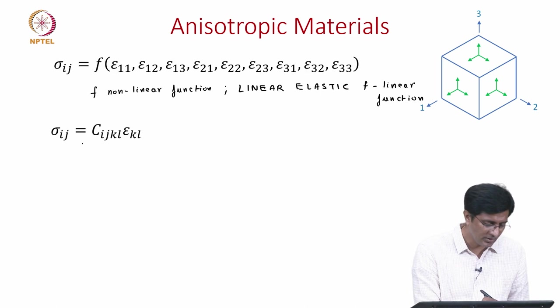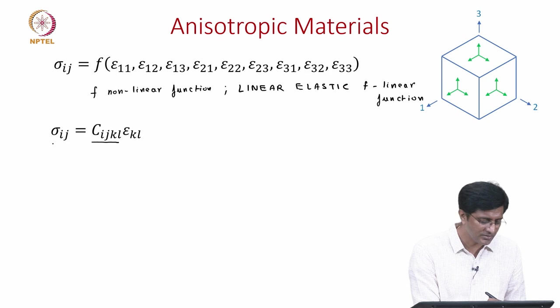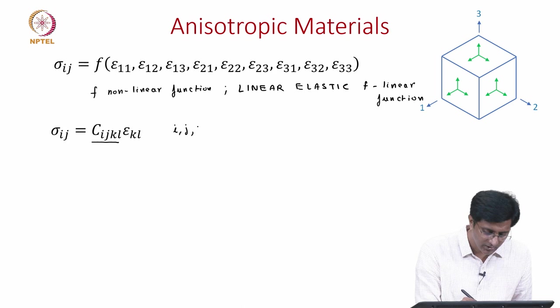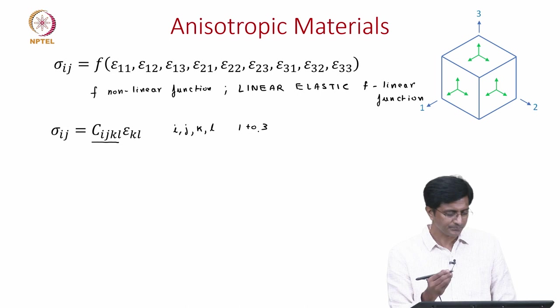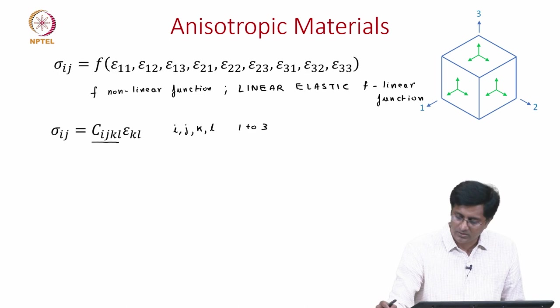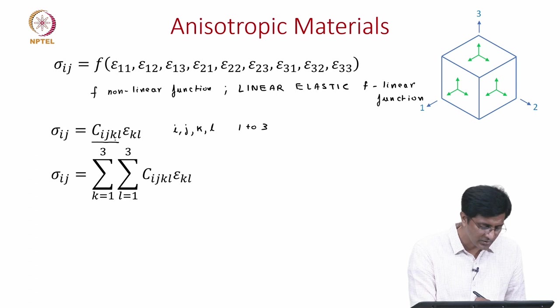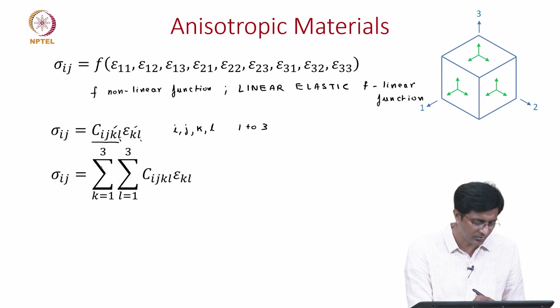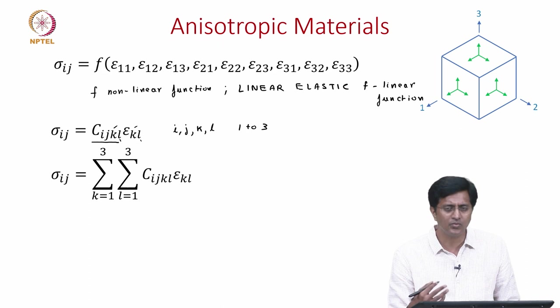Once we consider f to be a linear function, we can write the relation between stress and strain in terms of C, where sigma_ij are the 9 stress components and epsilon_kl are the strain components. Here i, j, k and l all go from 1 to 3. Effectively we can write this as a summation — replacing k and l with summations since they are repeated indices. In Einstein notation, when an index repeats twice we consider a summation. So we write it as a summation of k from 1 to 3 and l from 1 to 3: sigma_ij equals the sum over k and l of C_ijkl times epsilon_kl.